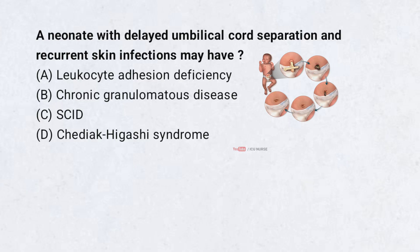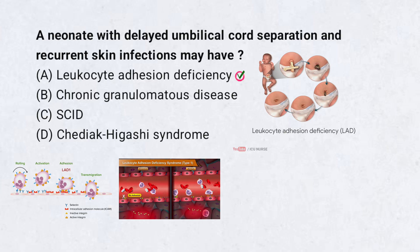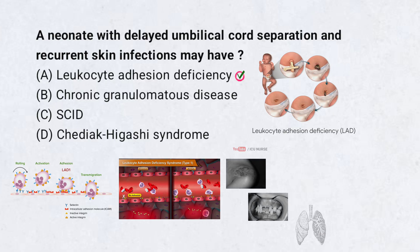A neonate with delayed umbilical cord separation and recurrent skin infections may have: A. Leukocyte adhesion deficiency, B. Chronic granulomatous disease, C. SCID, D. Chediak-Higashi syndrome. Correct answer: A. Leukocyte adhesion deficiency. LAD is a rare immune system disorder where WBCs can't stick to blood vessel walls to fight infections. Normally, WBCs roll, stick, and squeeze out of vessels to attack germs. In LAD, they lack glue proteins like integrins needed for this process. As a result, infections of skin, gums, and lungs keep recurring. Wounds heal slowly and don't show pus. Babies with LAD often have delayed umbilical cord separation.